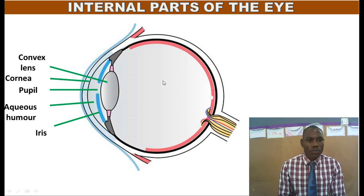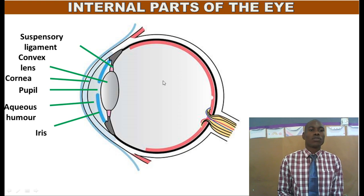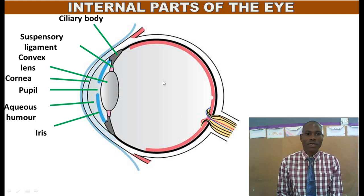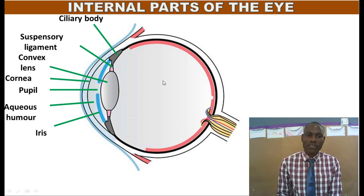We also talked about the convex lens. Take note of that, children. Then we went to the next part and we called it the suspensory ligament. We looked at the ciliary body, and under that we say that the ciliary body produces the aqueous humor. It also has ciliary muscles that help to adjust the shape of the convex lens in the eye.